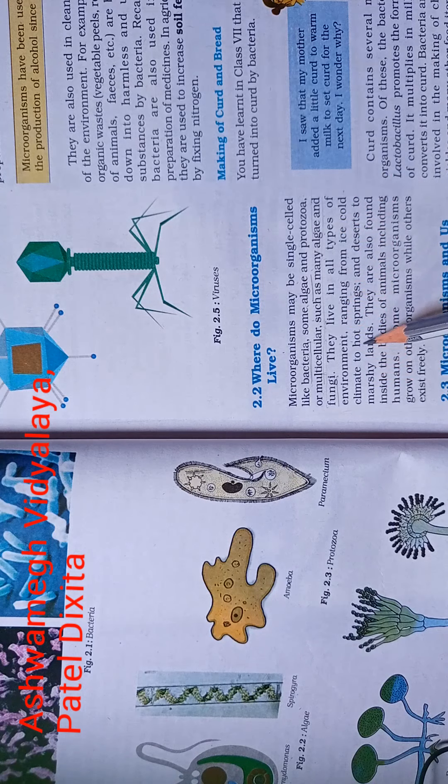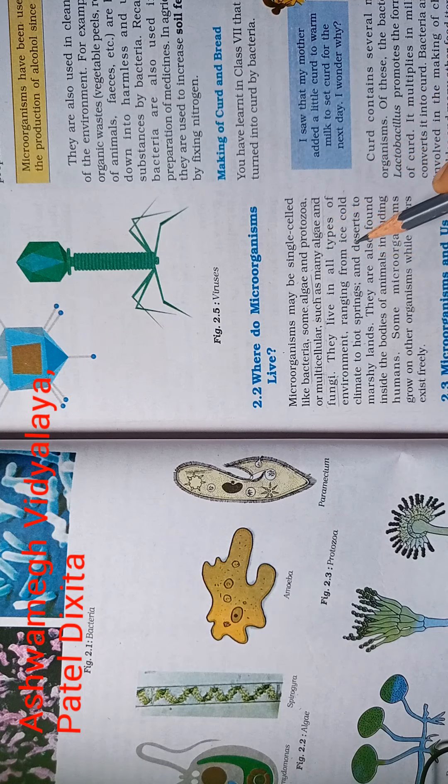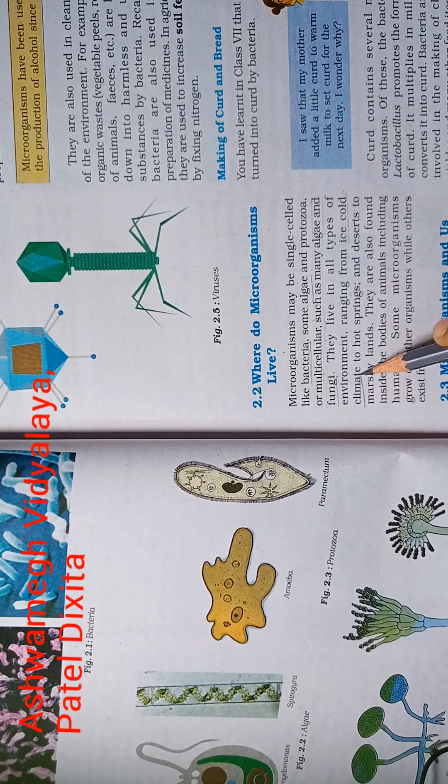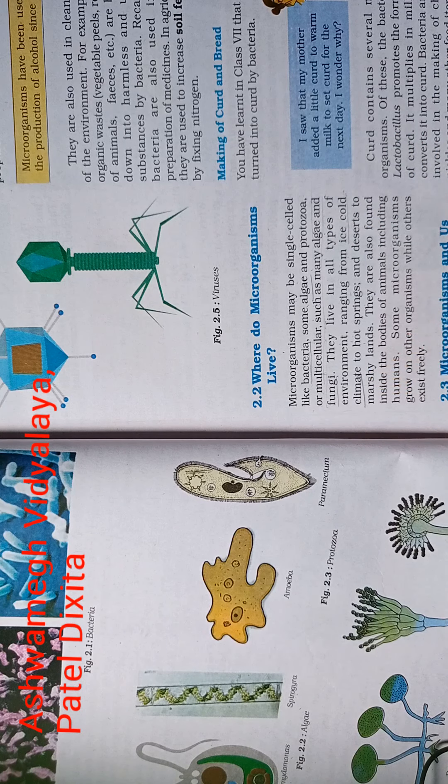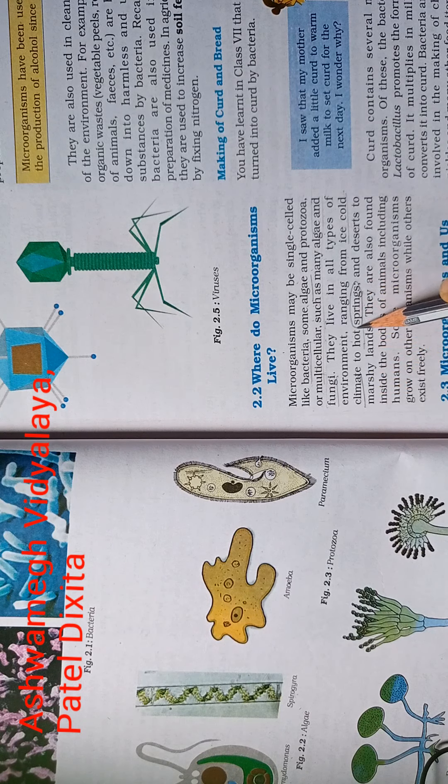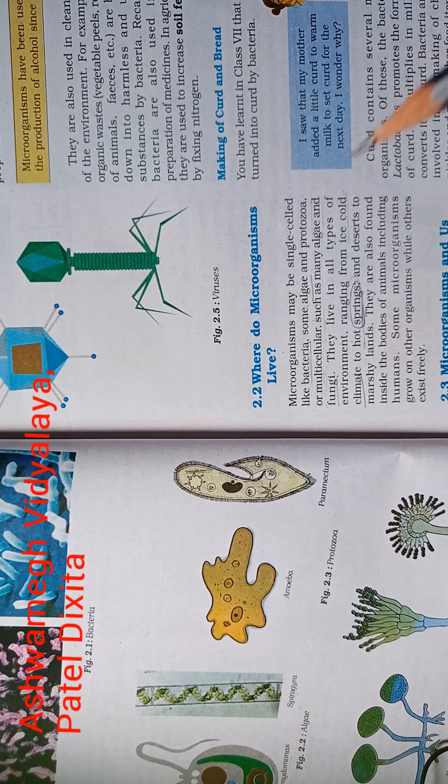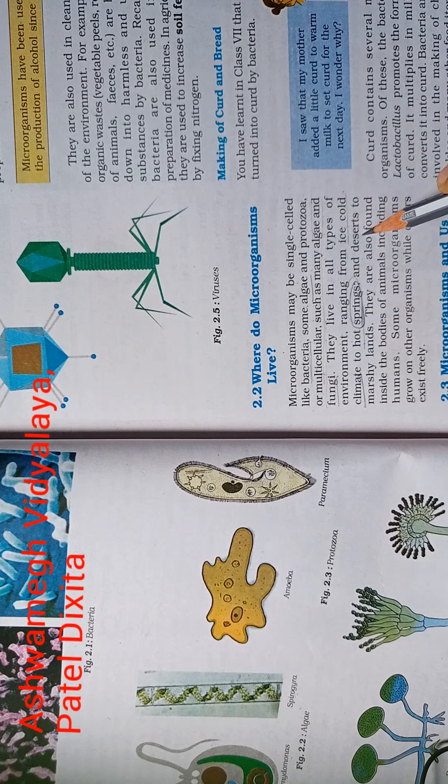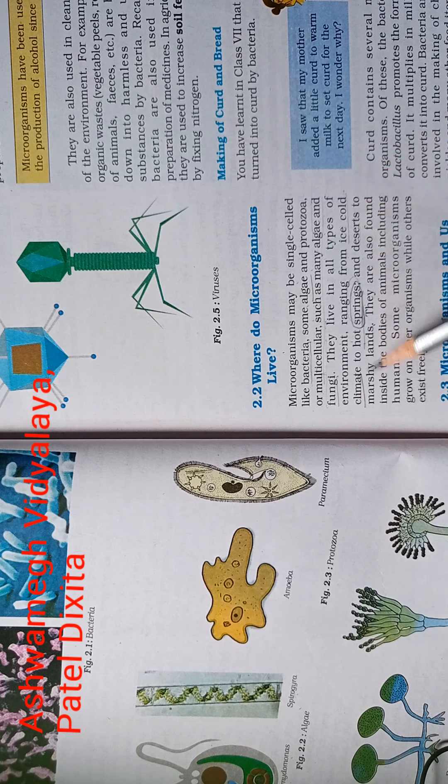They live in all types of environment ranging from ice cold climate to hot springs. These microorganisms are called climate. Climate means that. This is a hot spring. Springs means journey. This is a hot waterfall and desert to marshy land.